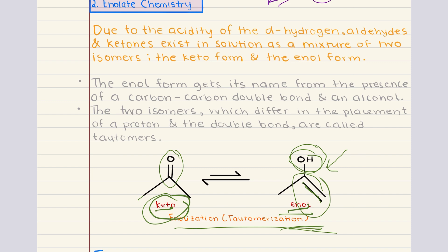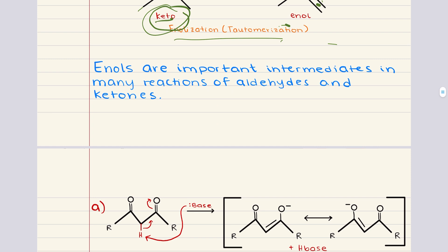But before we dive into how enolates are formed and used, this is a good moment to pause and clarify the distinction between enols and enolates since they're closely related, but they do serve different roles. An enol is a neutral tautomer of a carbonyl compound, and it features a carbon-carbon double bond, and it has that adjacent to an alcohol group, exactly like you see right here. An enolate, on the other hand, is the conjugate base of an enol, and it's formed when a base deprotonates the alpha hydrogen under basic conditions. While enols commonly appear as intermediates during tautomerization, enolates are highly reactive nucleophiles that participate in many important carbon-carbon bond forming reactions.